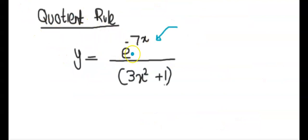We use the quotient rule to differentiate this one. The top one is always u. The bottom one is always v. Then you differentiate the u.